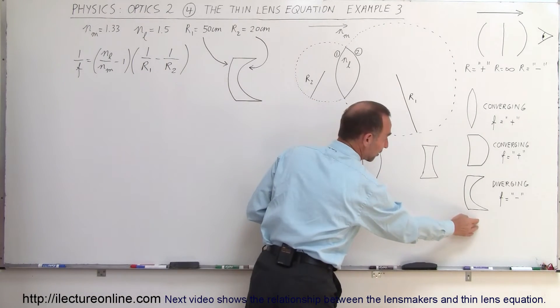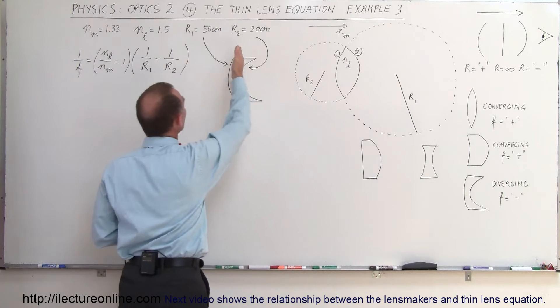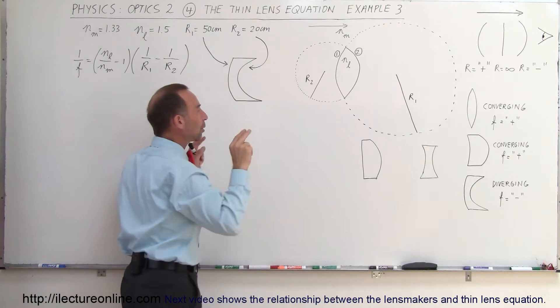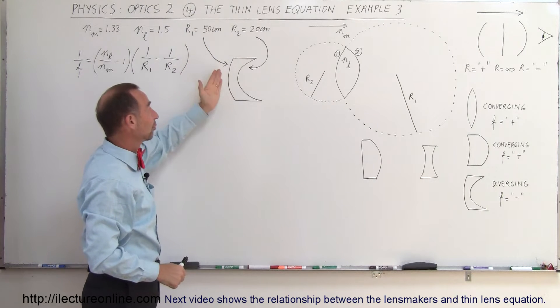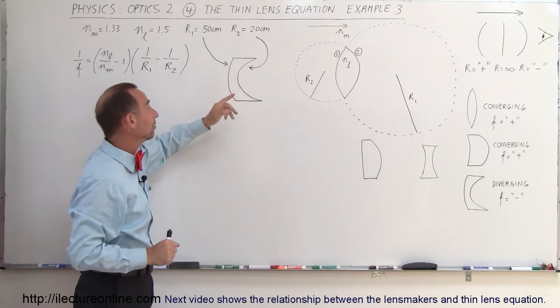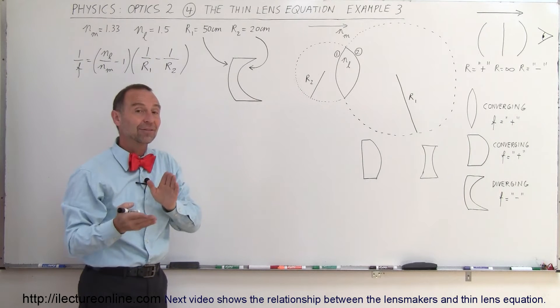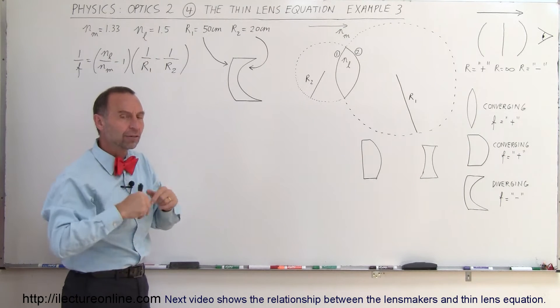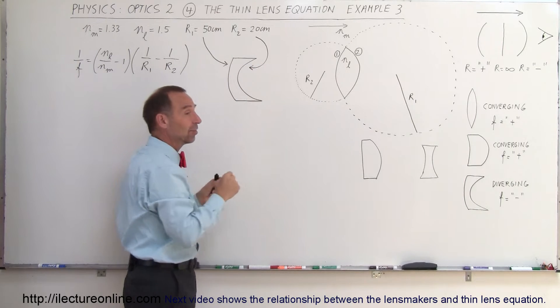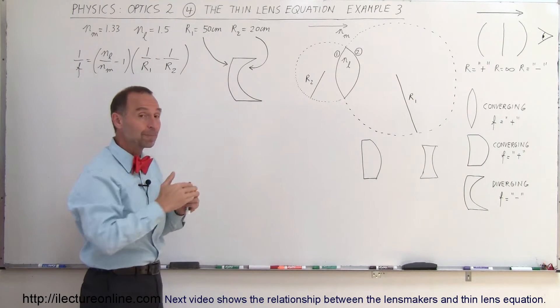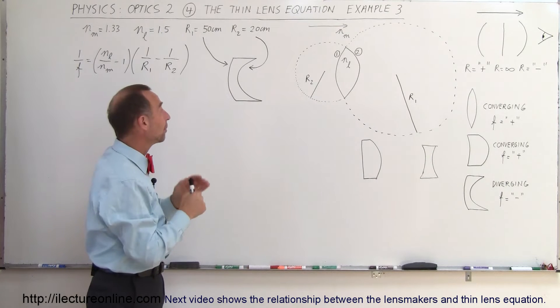This looks just like this lens over here. Notice even though both of the radii have a positive curvature, the left side or the front side of the lens has a positive curvature which makes it a converging lens. The back side of the lens has a positive curvature but that would make it a diverging lens because if the back side of the lens has a positive curvature or bends to the left then it's a diverging property.